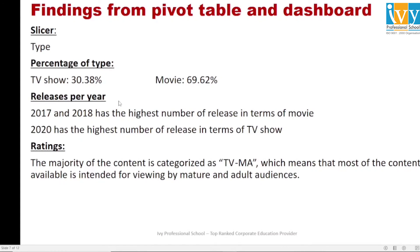From the release per year diagram, 2017 and 2018 had the highest number of movie releases, while 2020 had the highest number of TV show releases. The majority of the content is characterized as TV-MA, which means that most of the content available on Netflix is intended for viewing by mature and adult audiences.